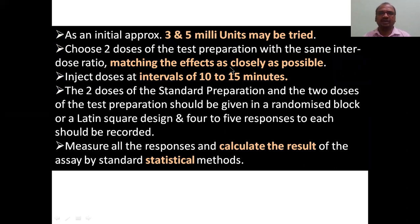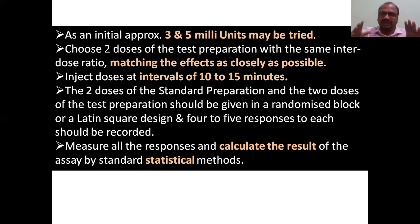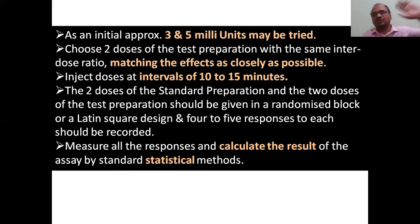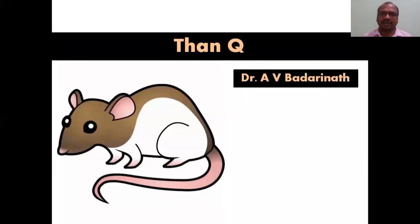Match the effect and compare standard and test side by side. When giving two doses of test and two doses of standard, give a gap of 10 to 15 minutes between doses — first give 3 milli units, wait 10–15 minutes, then give 5 milli units. Calculate the results by standard statistical methods: compare how much BP is elevated with the standard versus the test, and calculate potency using a formula like M1V1 = M2V2.